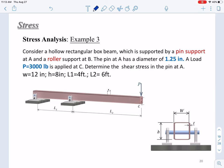In this third example, we will deal with another two-dimensional structure. Consider a hollow rectangular box beam, as shown here, which is supported by a pin support at A and a roller support at B. The pin at A has a diameter of 1.25 inches. The load P equals 3,000 pounds is applied at point C. So, determine the shear stress in the pin at A.